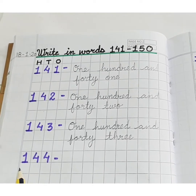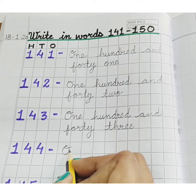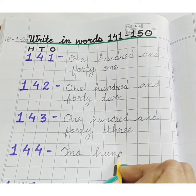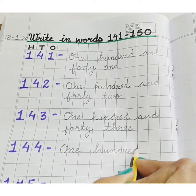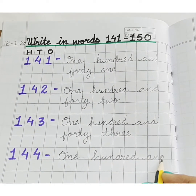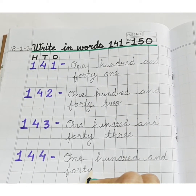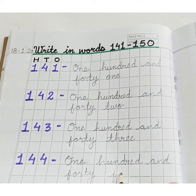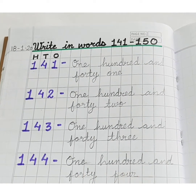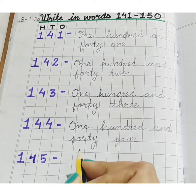ONE. H, U, N, D, R, E, D — ONE HUNDRED. AND F, O, R, T, Y — FORTY. F, O, U, R — FOUR. 4. ONE. One Hundred and Forty Four. 144.